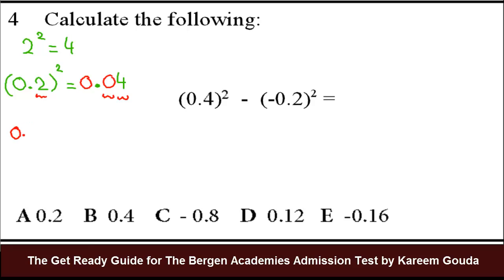Similarly, let's say we have something like this, 0.02 all squared. Then we know that the 2 squared is 4, but since here we have 2 places to the right of the decimal point, then we need to have 4 in the answer. So 1, 2, 3, and then the 4th will be the number that we squared. So the answer will be 0.0004.